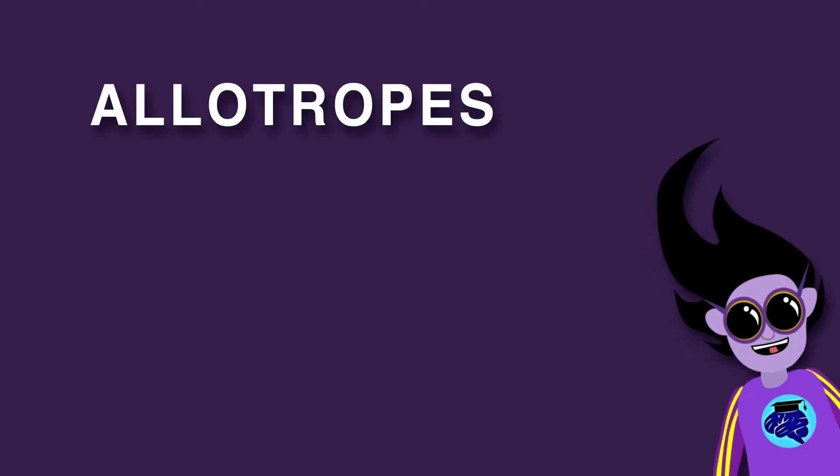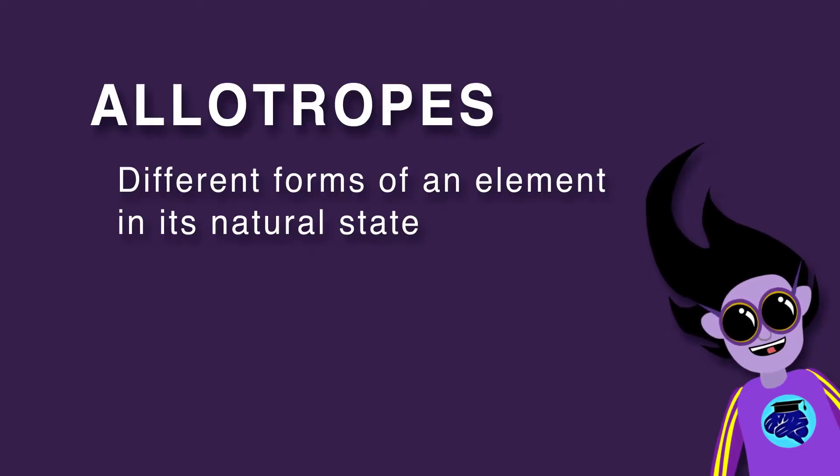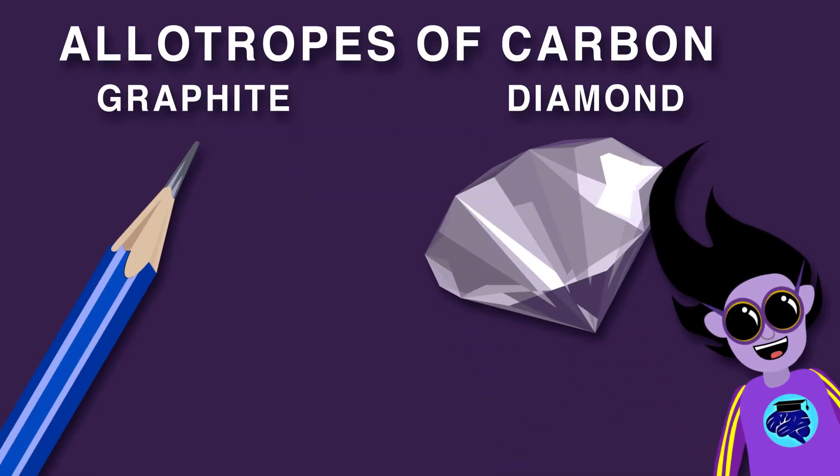Sometimes you can have different allotropes, different forms of an element in its natural state. For example, graphite and diamonds are both allotropes of carbon.